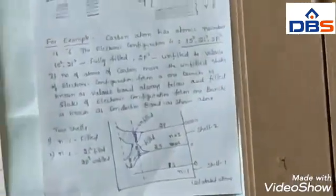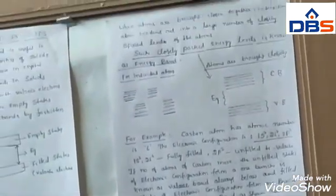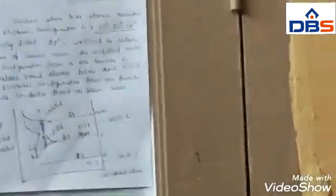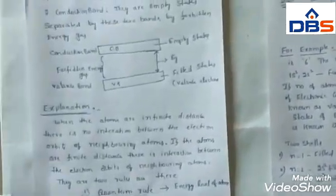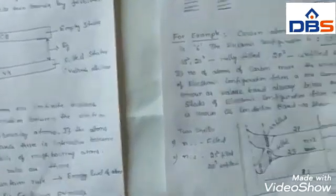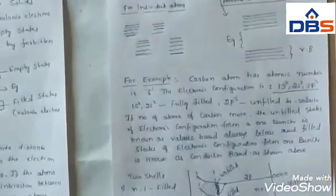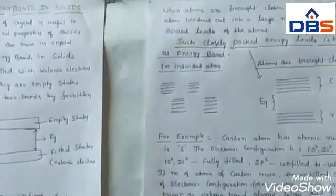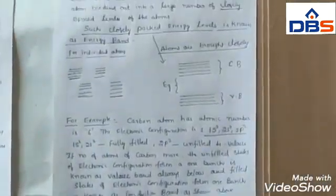Finally, we conclude that there are two energy bands: the valence band and the conduction band. In the valence band, it is filled with valence electrons. In the conduction band, it is an empty state. The valence electrons are the electrons in the unfilled states of the outermost orbit of the electronic configuration. With the help of this configuration, we have explained the origin of energy bands in solids.